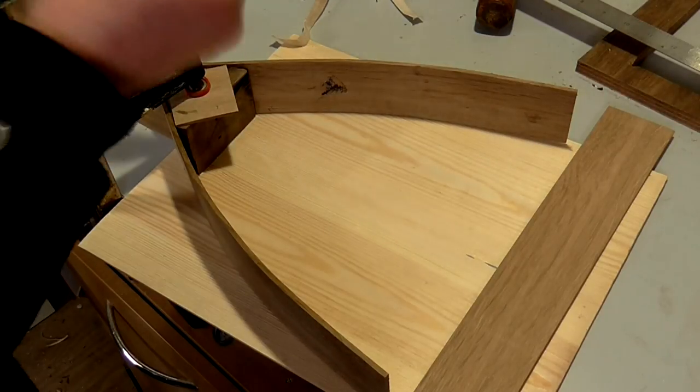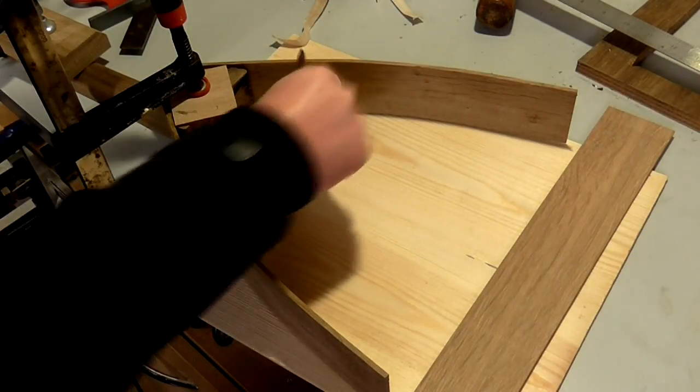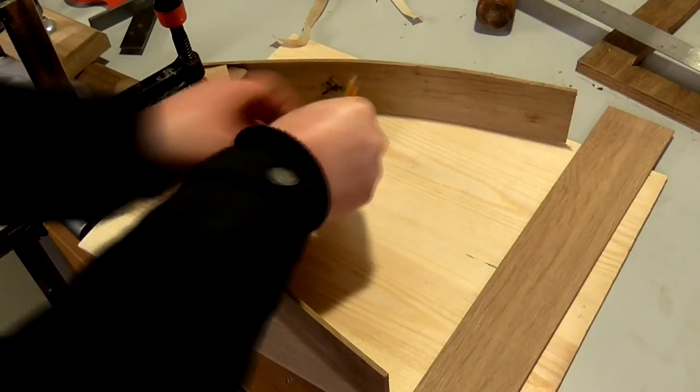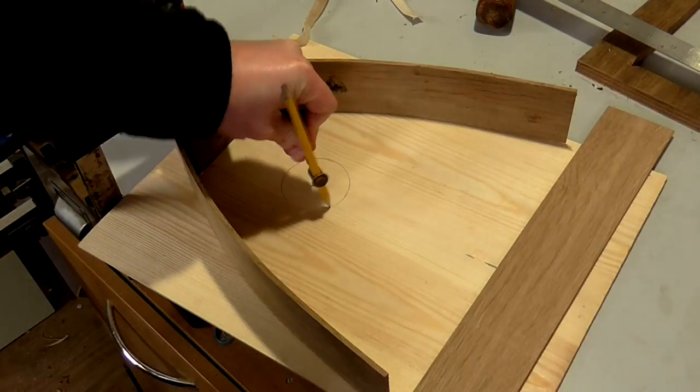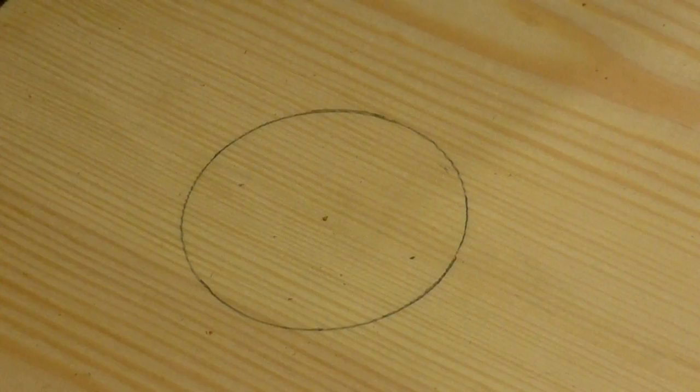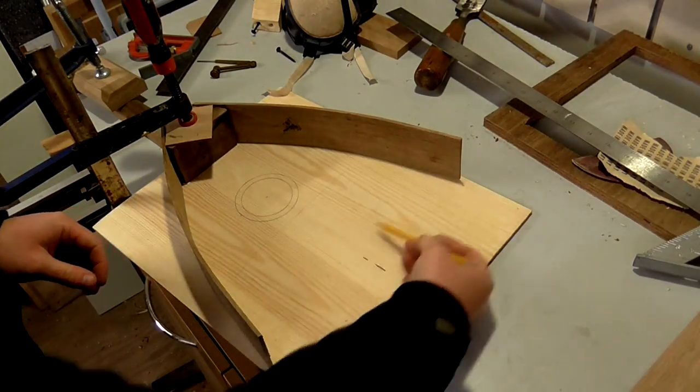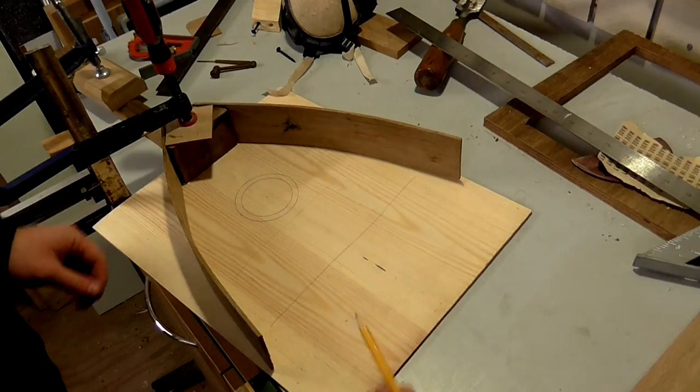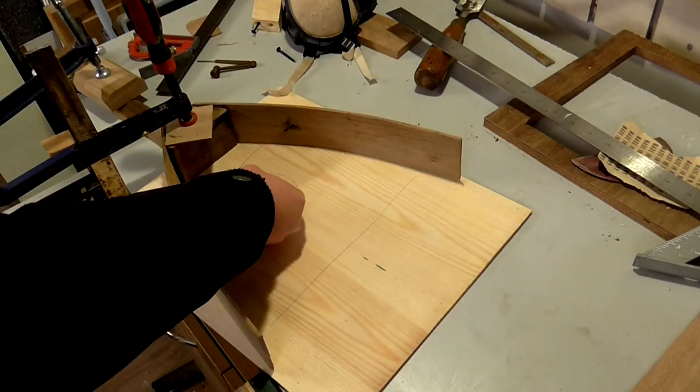I then marked up on the inside where the sound hole would later be placed. I did this just so that I could decide where to place some reinforcing ribs to the inside of the soundboard. I marked up where the ribs could be placed and then cut some scraps of pine to size on the bandsaw.